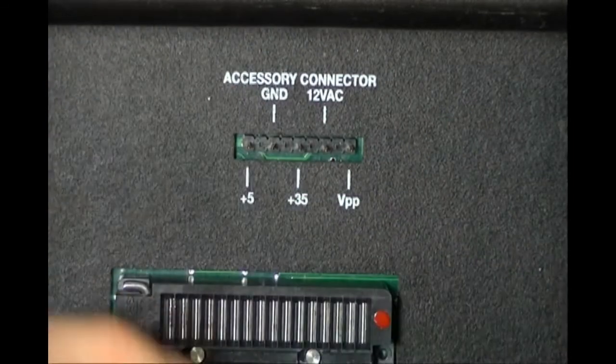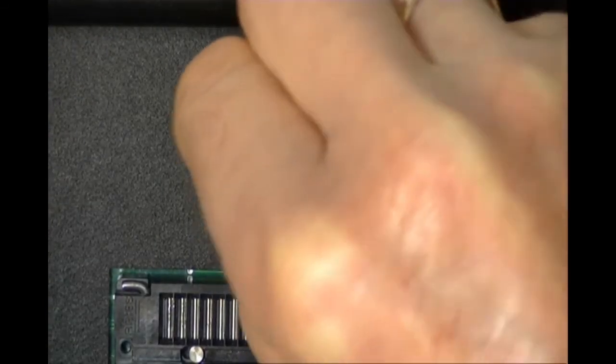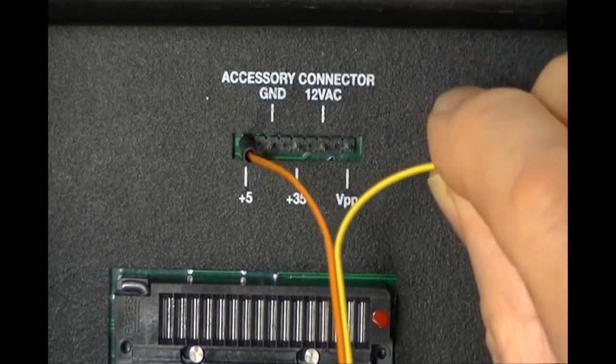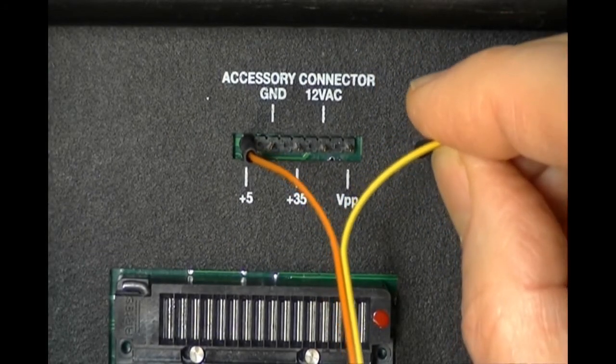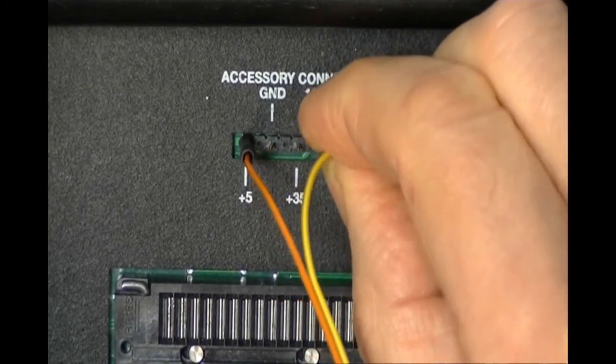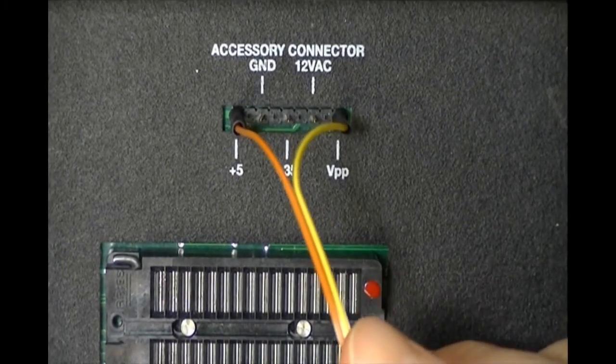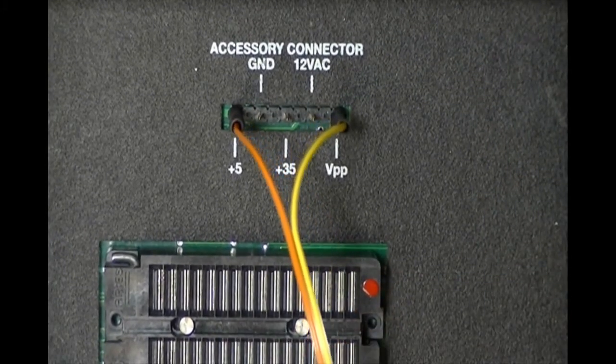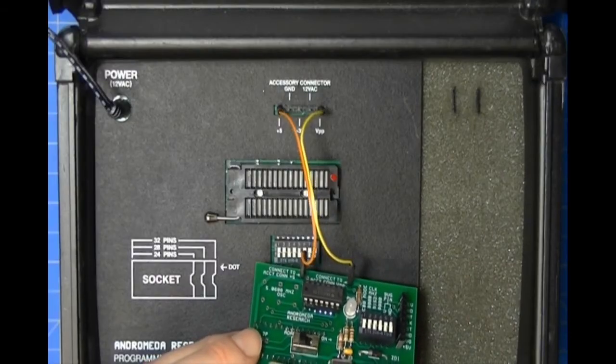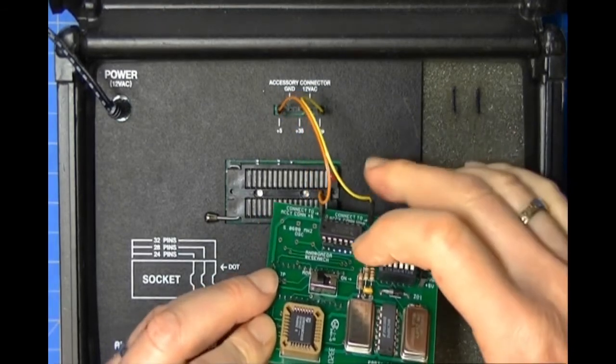Even though the programmer is powered up, it does not hurt it to do this. You can just place the orange wire over the plus five pin and the yellow wire over the VPP pin. Now we're going to install the adapter into the programming unit itself.